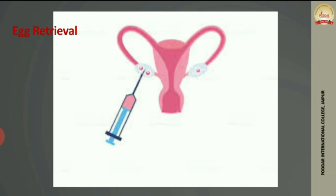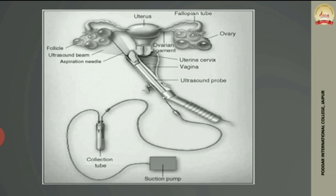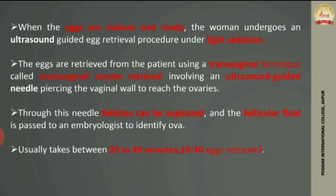The second step is egg retrieval. Using a special apparatus with a suction needle and collection tube, the needle is inserted transvaginally through the cervix to reach the ovary. Under ultrasound guidance, the needle aspirates the follicular fluid from the ovary into the collection tube. This process is slightly painful, so women are given light sedation or anesthesia. The follicular fluid contains liquid, egg cells, and other cells. The procedure takes about 20 to 40 minutes, and 1 to 30 eggs can be retrieved.